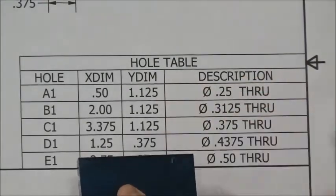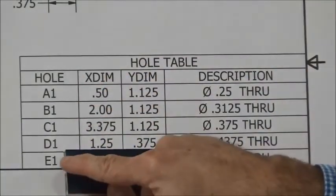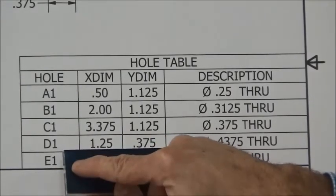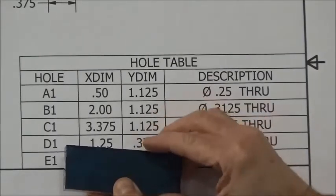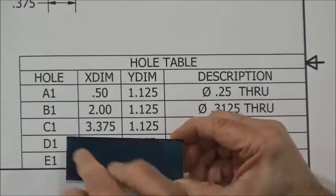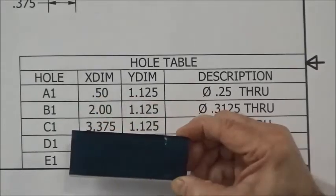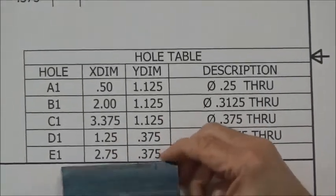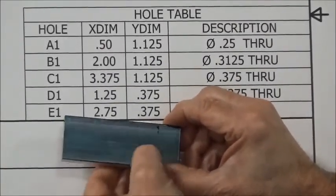We also have the Y dimension we have to take into consideration, and so we go up our Y dimension this way, and from that point we measure one and an eighth of an inch up our Y coordinate. So from this reference line right here, this edge, we're going to go up an inch and an eighth for A1, then B1 is going to be an inch and an eighth, and C1 will be an inch and an eighth. All three of these holes will be on the same plane. Their center lines will be all in the same line. You drop down D for D1 and E1. Their Y dimensions are three-eighths of an inch, so we're going to have two holes that are a little bit closer to this reference edge, about three-eighths of an inch.